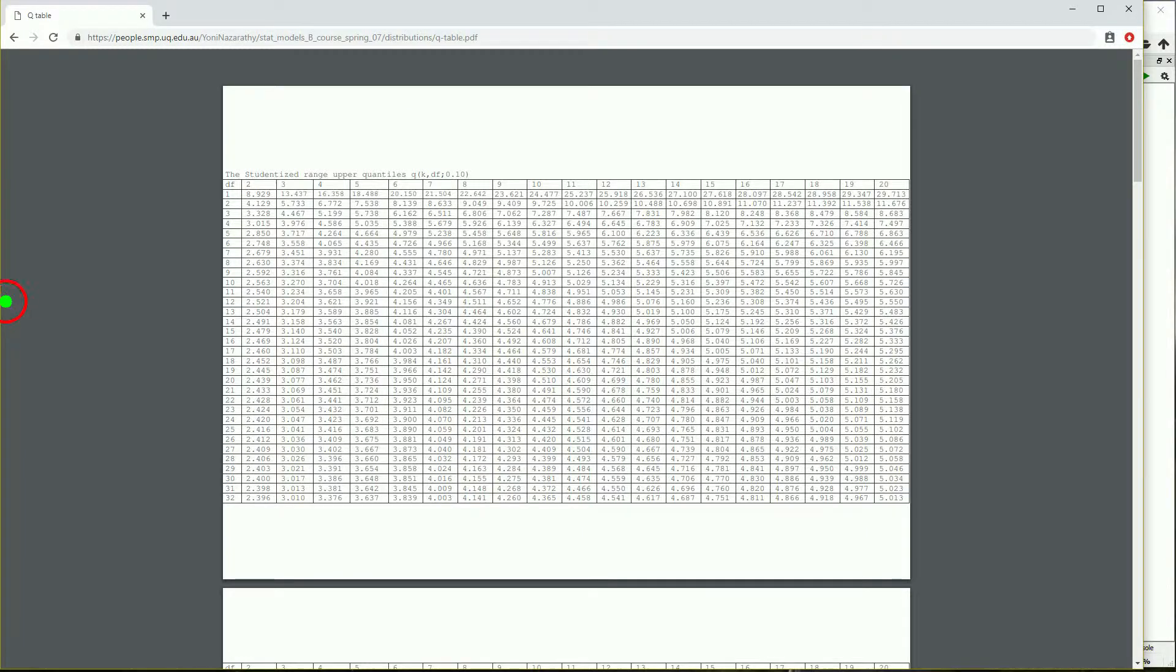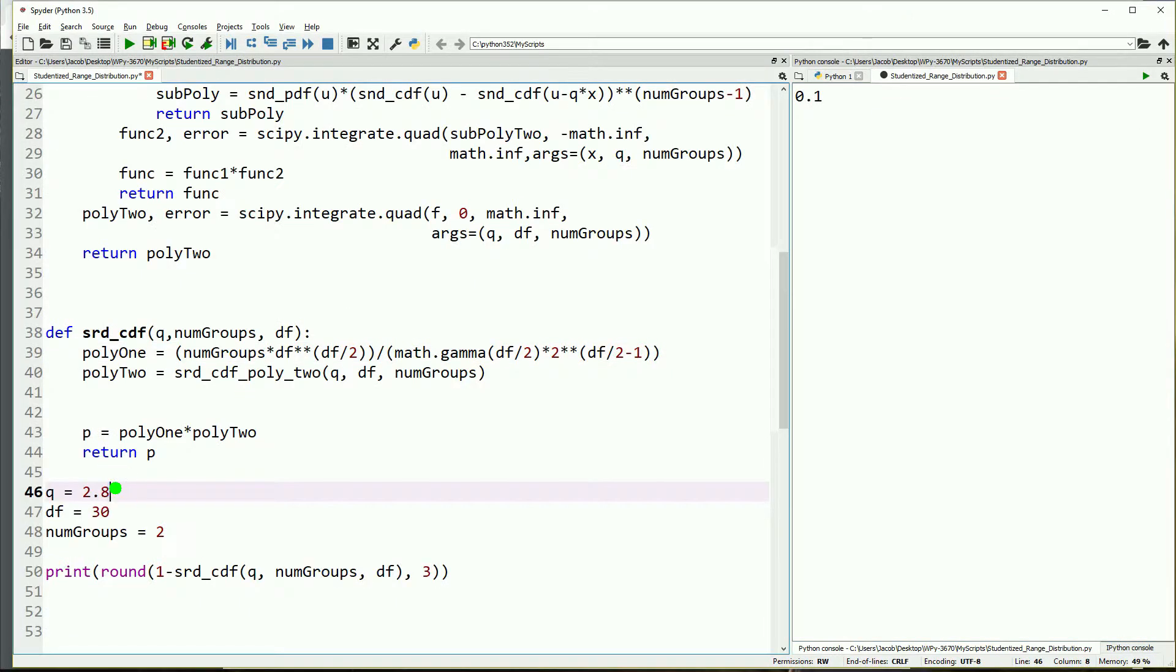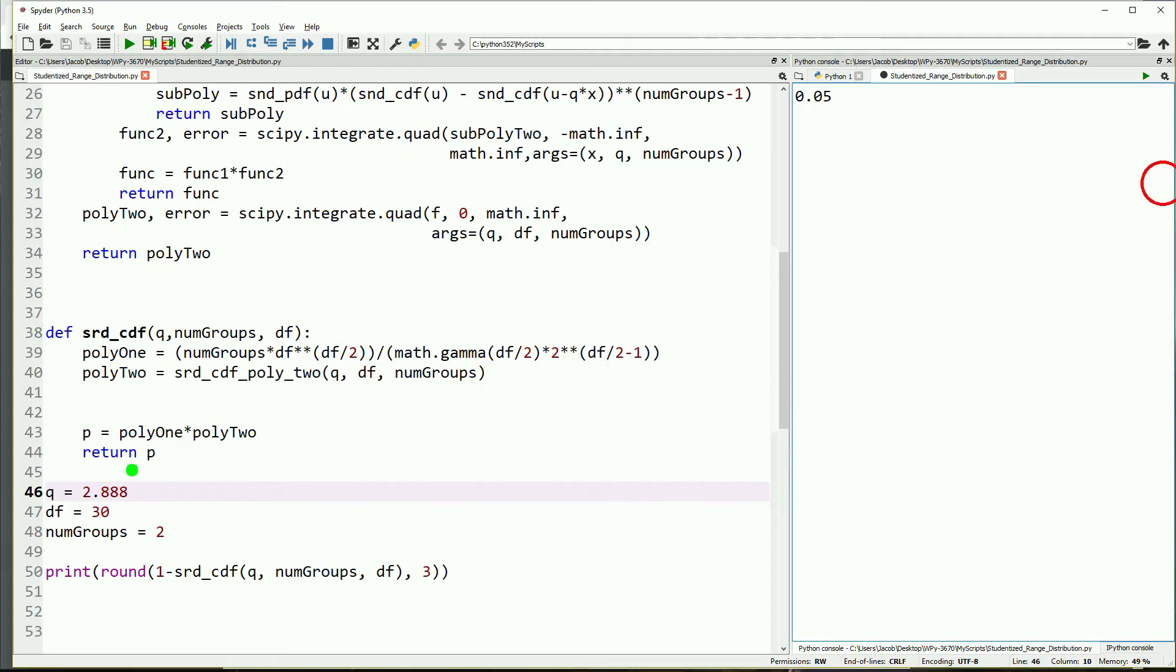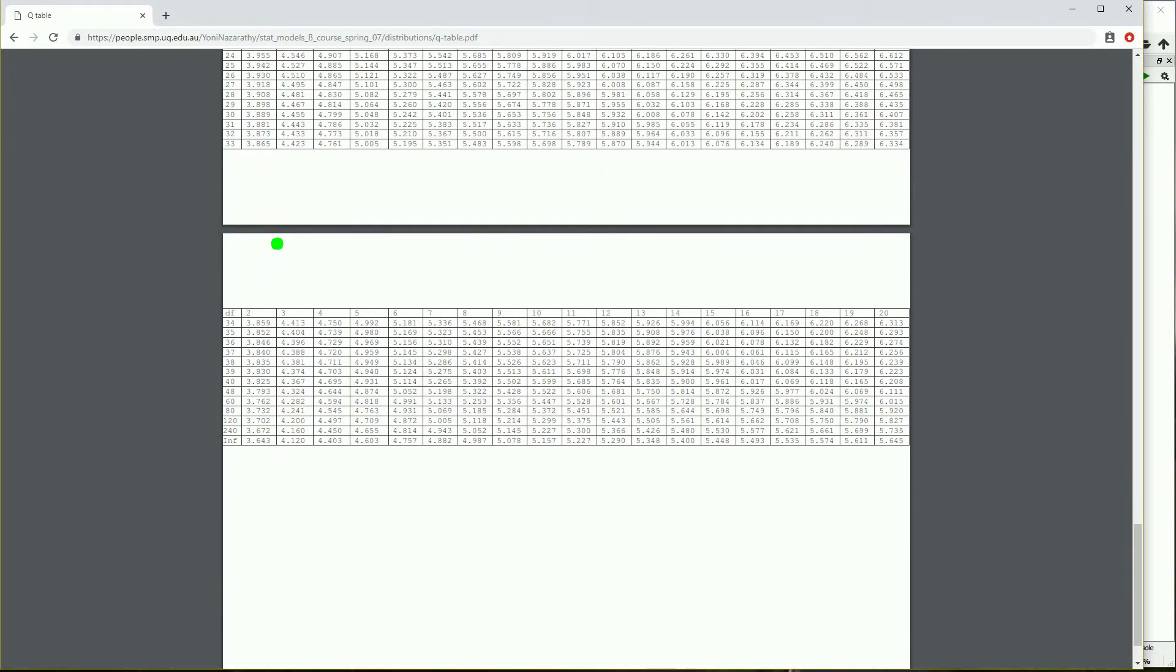Let's go ahead and tab over to our table and pick another value. So we'll go ahead and pick out 30 degrees of freedom and do everything except we want 0.05. Okay, so we get 0.05. Let's go ahead and look at 0.01. So we need 3.889.01. There we go. That looks like we have everything correct.